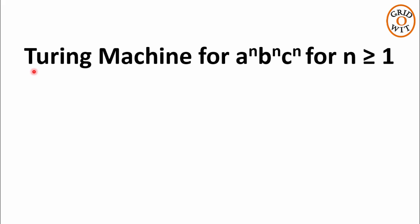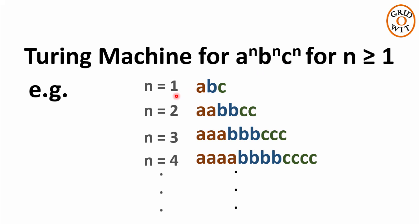Hello everyone. In this lecture we will design a Turing machine for accepting all the strings of the form a^n b^n c^n for all n greater than or equal to 1. That is, the number of a's, number of b's, and number of c's are all equal, and all a's come first, followed by all the b's, followed by all the c's. For example, the smallest string of this type is 'abc' when n equals 1.